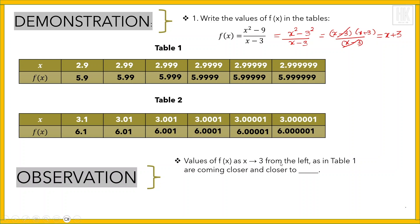Observation: As x approaches 3 from the left in Table 1, the values are coming very close to 6. As x approaches 3 from the right in Table 2, the values are also coming closer and closer to 6. We can conclude from both tables that